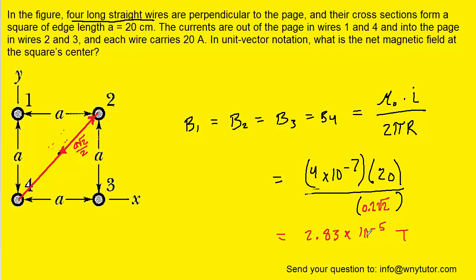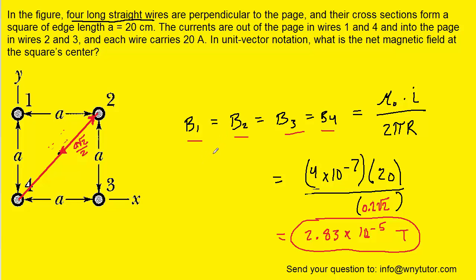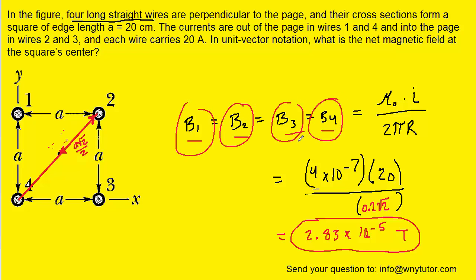Tesla is the standard unit of magnetic field, so that's the magnitude of each of the four magnetic fields. It might be tempting to add this number to itself four times or multiply by four to get the total magnetic field, but we can't do that because the magnetic fields are vector quantities and they're pointing in different directions. So our next step is to look at the directions of B1, B2, B3, and B4.